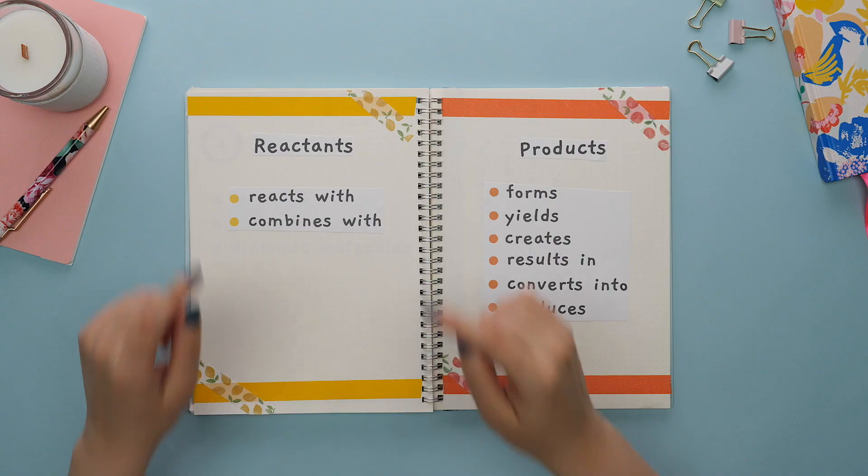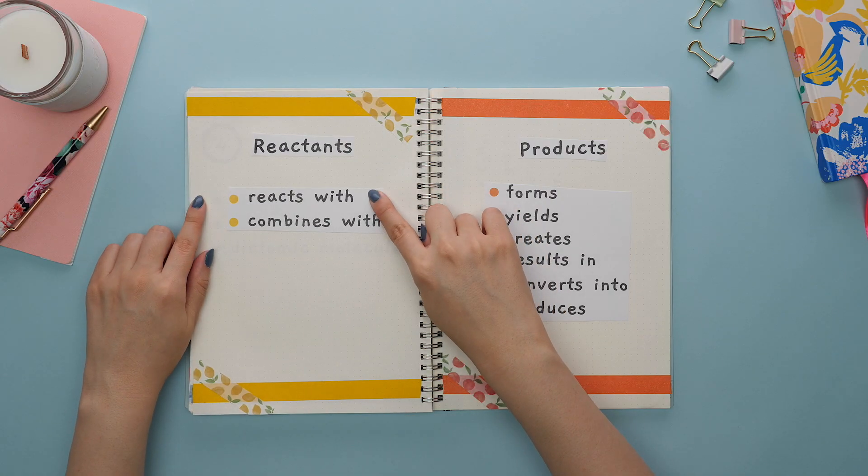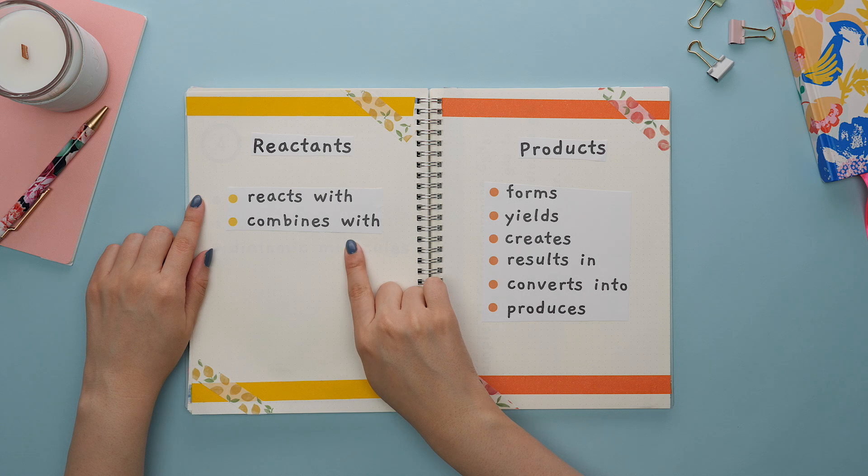Next, in a balanced chemical equation, it is important to know what your reactants and your products are. The keywords for your reactants are these: reacts with or combines with.